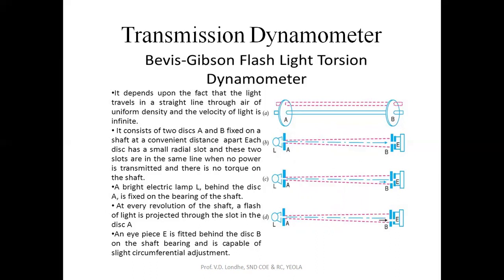Here there are two discs: disc A and disc B, mounted on a shaft to which the engine output shaft is attached. On the A side, a light source is supplied and an eyepiece is placed. When there is no torque transmission on the output shaft, there is no twisting action, so the light rays coming from the source directly impact on the eyepiece. When torque transmission takes place, there is twisting action on the shaft.